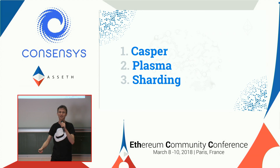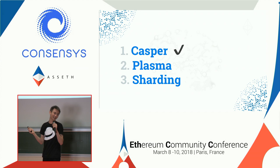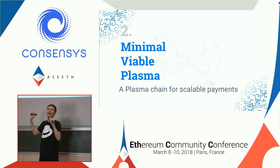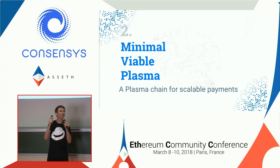Casper, Plasma, and Sharding — these are like the three pillars of Ethereum in 2018. I talk a lot about Casper, or at least I did last year, and so I'm going to assume everyone knows Casper. But we're going to get into Minimum Viable Plasma. I've given this section of the talk a number of times but this time I'm refining it, so this is going to be the best Minimum Viable Plasma overview.